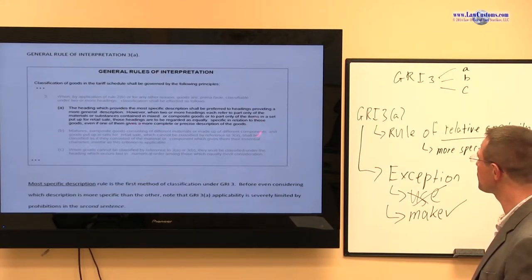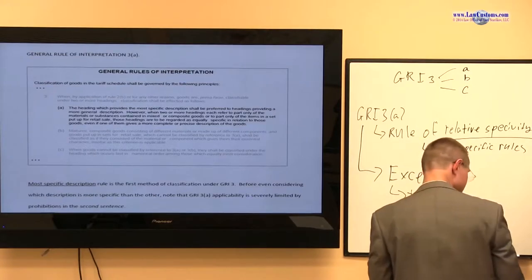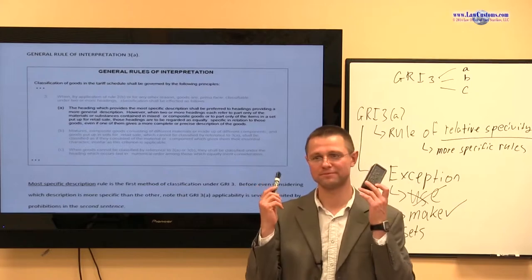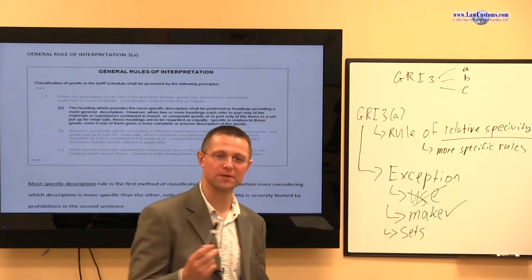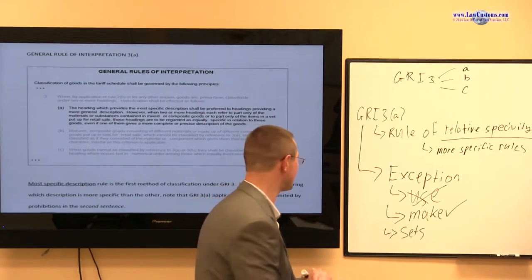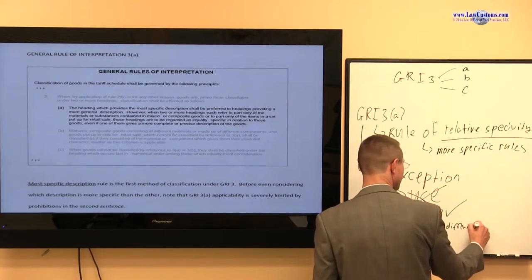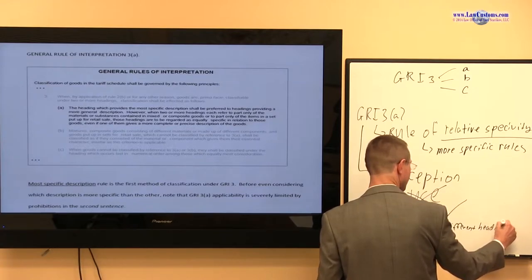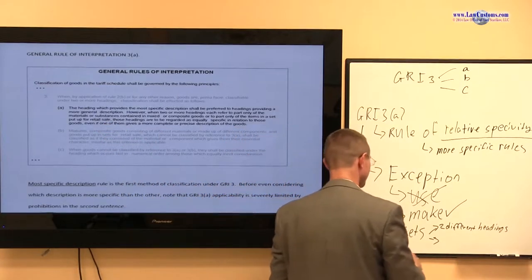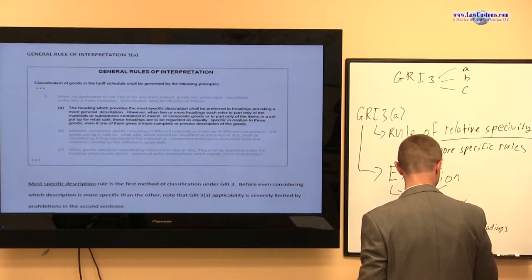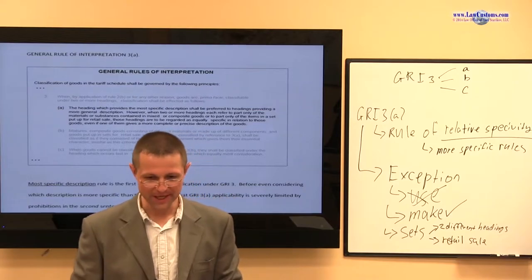The next one, it goes for the sets. You can purchase those together. It must be, what's the requirement for the set? Well, one of the requirement is it must be classified under two different headings. The next requirement is it must be for retail sale. So that means if you have a wholesaler doing the imports.